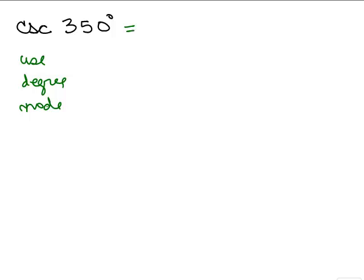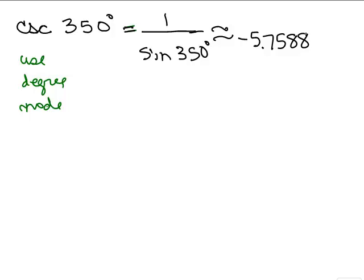So there is no cosecant button on most calculators and so I have to know that that's the reciprocal of the sine of 350 degrees. So you want to plug that in your calculator and then round it to four places after the decimal point. And let's see, I get negative 5.7588 when I round the answer.